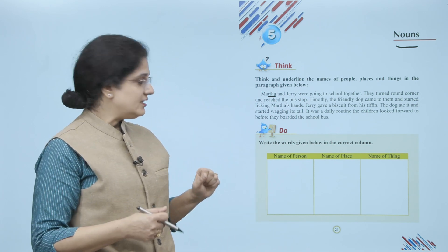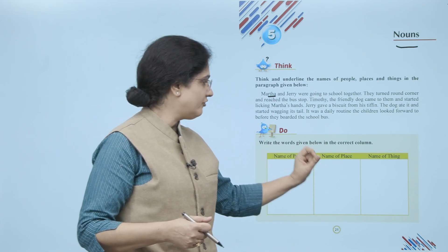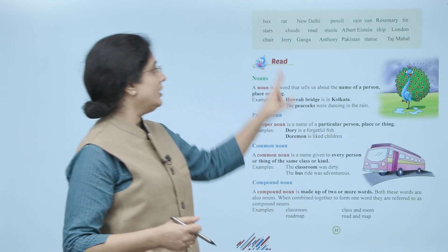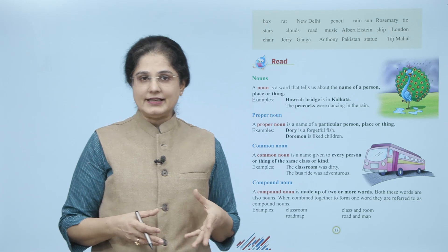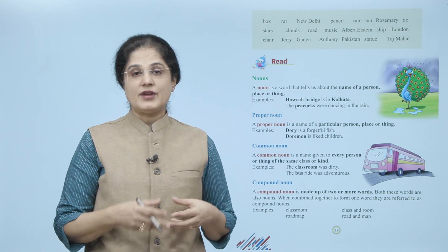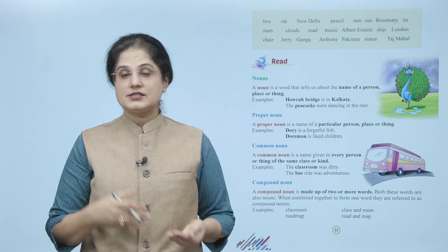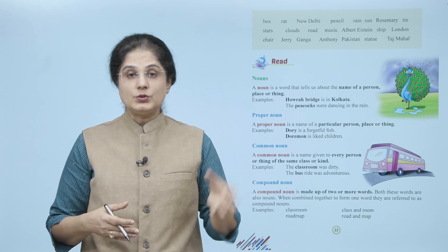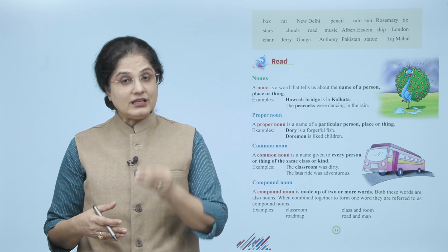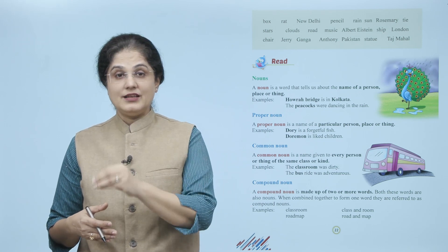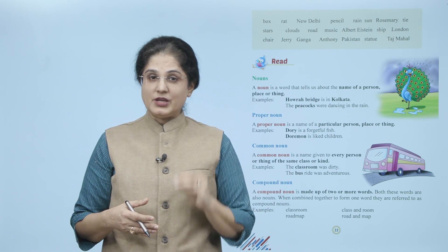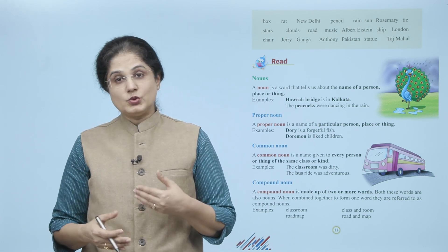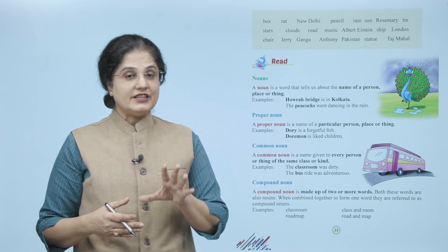Yeh teen columns diye gaye hain: Name of Person, Name of Place, Name of Thing. Aap kya karenge ki aapko is box me jo words diye gaye hain — jaisi ki box, rat, New Delhi, pencil, rain, sun, Rosemary, tie, stars, clouds, road, music, Albert Einstein, ship, London, chair, Jerry, Ganga, Anthony, Pakistan, statue, Taj Mahal — in saare words ko aap in columns mein likhenge.